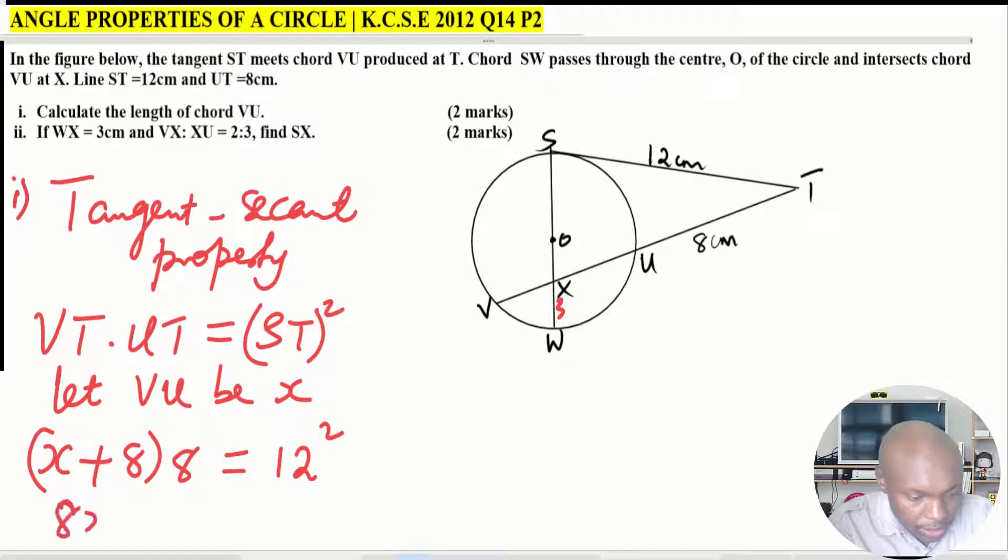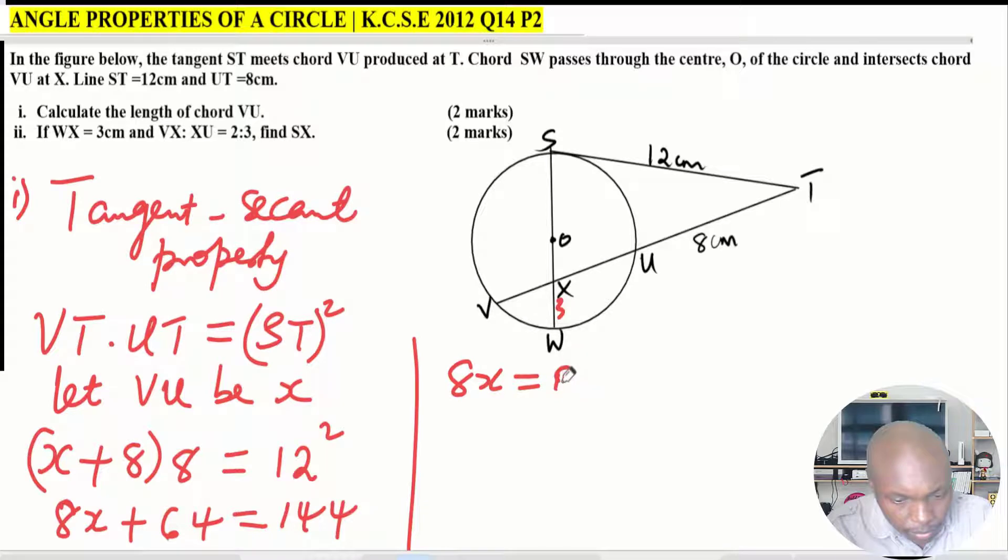UT is 8. That should give ST squared, ST is 12 squared. Working these out, you get 8x plus 64 equals 144. When you work out here, you get 8x equals 80, and x will be 10.